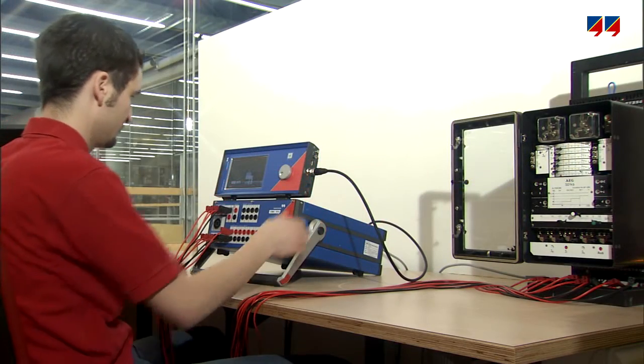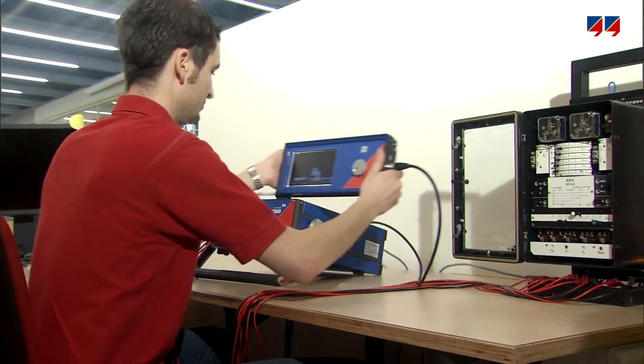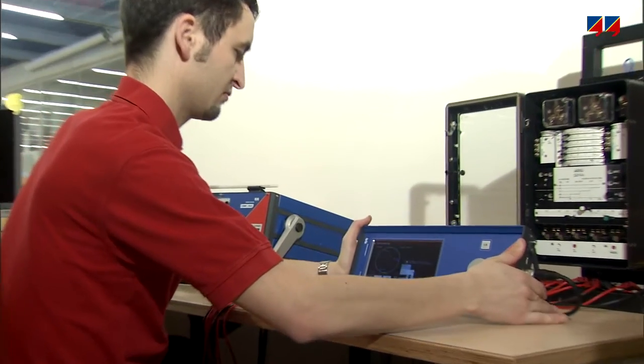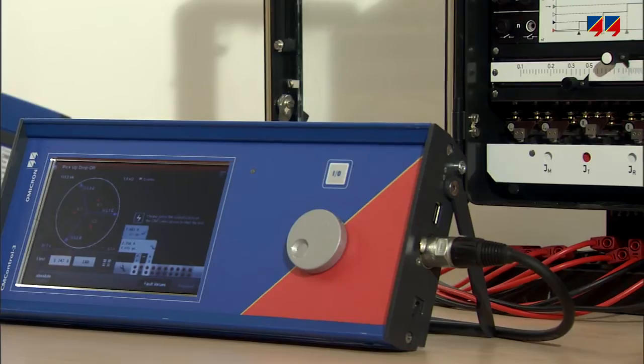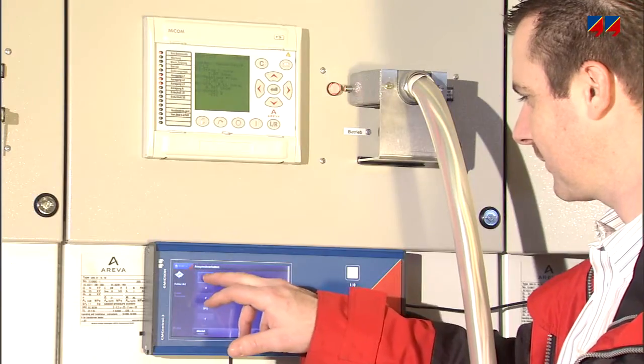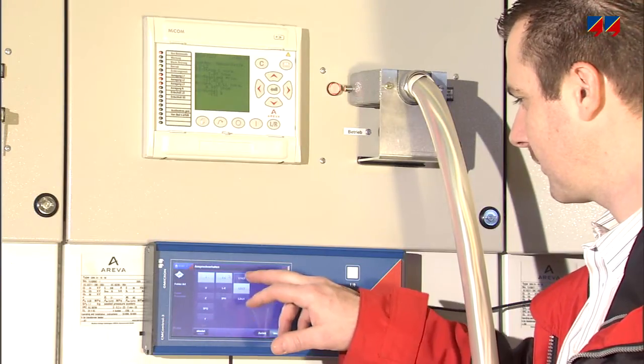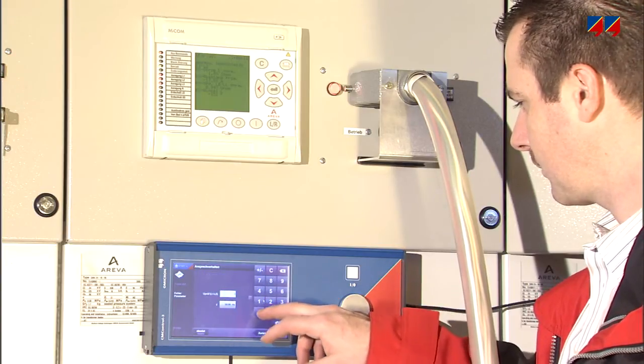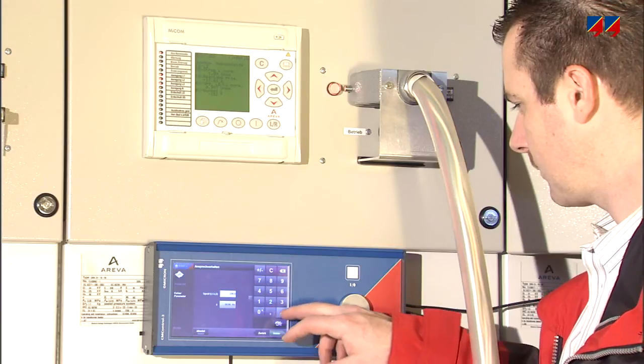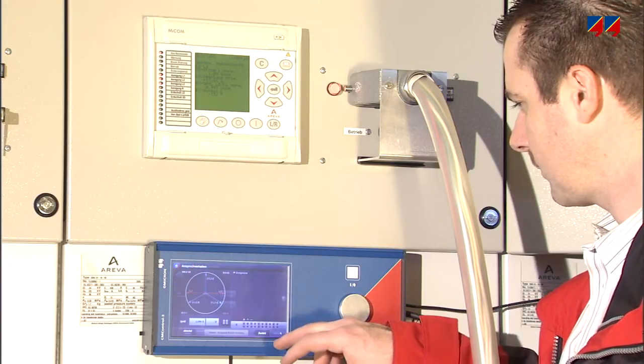The engineer can also detach the CM control from the CMC. For instance, when the user needs to compare values directly on the relay, its magnetic back panel can be used to attach the CM control to a number of surfaces, such as a protection cubicle.